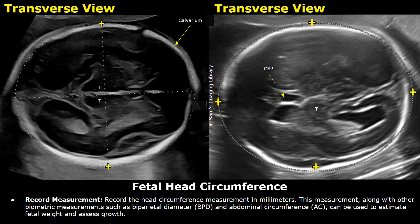This measurement, along with other biometric measurements such as biparietal diameter and abdominal circumference, can be used to estimate fetal weight and assess growth. It is recommended to repeat the measurements a few times to ensure accuracy and consistency.